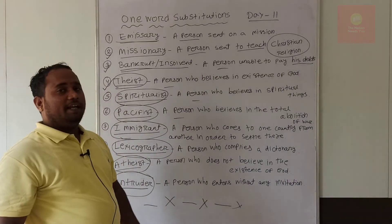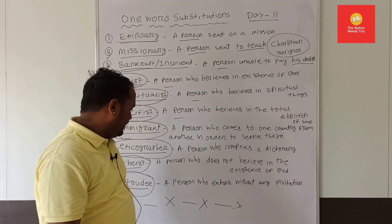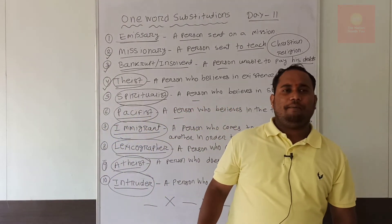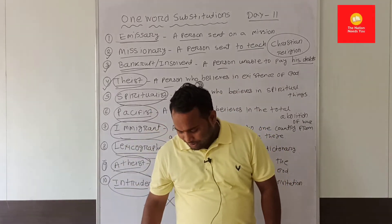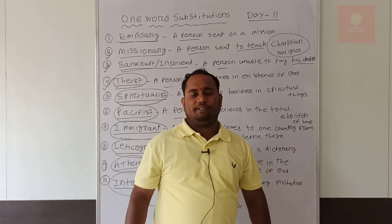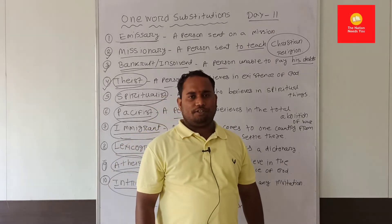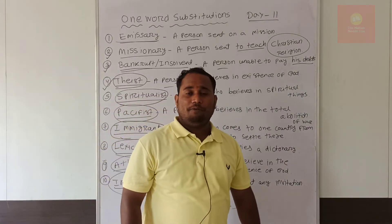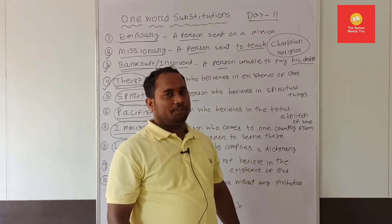The next word is 'intruder.' An intruder is a person who enters forcibly and illegally without any invitation. For example, at weddings here it is common to have intruders — people who come without an invitation, maybe for fun, need, or other reasons. The best example of an intruder is a terrorist — we have not given them any invitation, yet they come, so they are intruders.